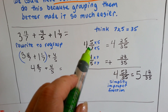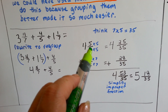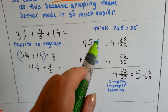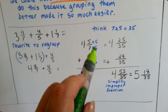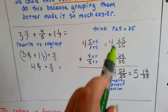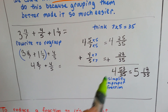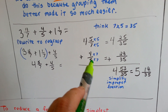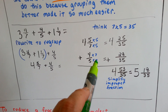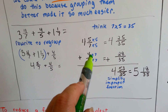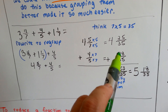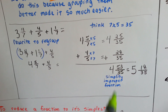What does 7 need to become 35? Multiplied by 5 — and 5 gets jealous, so it gets multiplied by 5 also, giving us 4 and 25 thirty-fifths. What does 5 need to become 35? It needs to be multiplied by 7. 4 gets jealous, it's multiplied by 7, and we get 28 thirty-fifths.